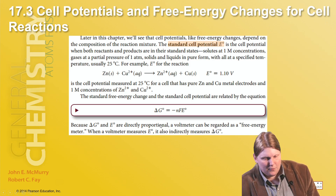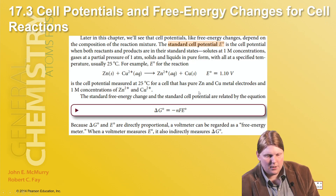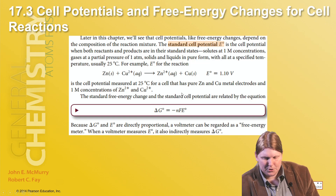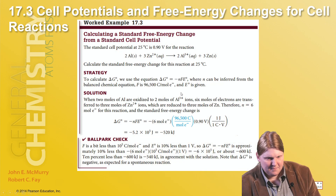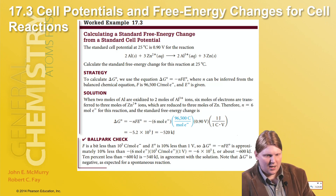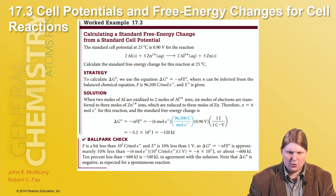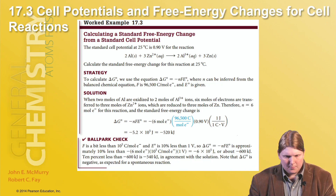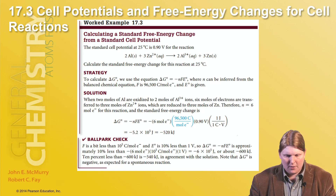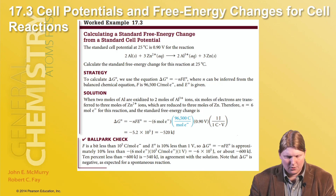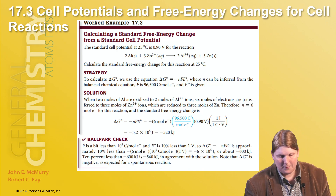Any galvanic cell producing a voltage must inherently be spontaneous. For example, if the voltage is 0.9 V and six moles of electrons are transferred, we plug in N = 6, F = 96,485 C/mol, and E = 0.9 V. All the units cancel and we end up with a number in joules — which we convert to kilojoules — and it's negative as we expect for a spontaneous reaction.